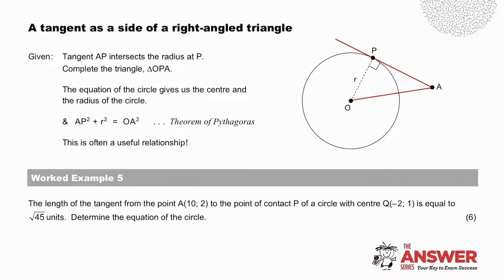We need to consider a tangent as a side of a right-angled triangle. The equation of a circle gives us the center and the radius. And AP squared plus the radius squared is equal to OA squared. Pause to apply this useful relationship in worked example 5.